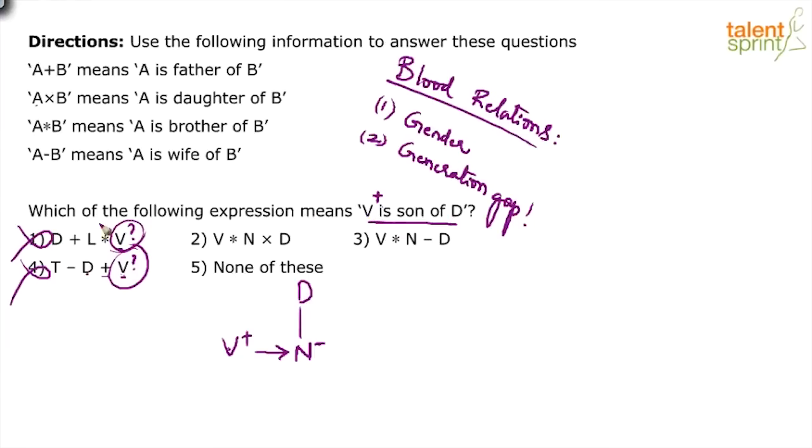But the question is V is the son of D. Which of the following expression means V is the son of D? Second option. See, V is the daughter's brother. Your daughter's brother is your son. The daughter's brother is the son. So V is the son of D in option 2.